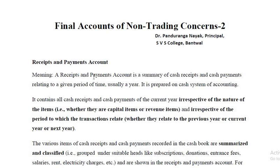It contains all cash receipts and cash payments of the current year irrespective of the nature of the items — whether the items are capital or revenue in nature. Revenue means recurring in nature; capital means non-recurring in nature. Irrespective of the period to which the transactions relate — whether current year, previous year, or next year — as long as you have received or paid the cash, the summary will be recorded in the receipts and payments account.